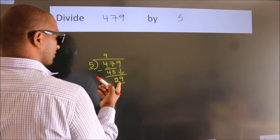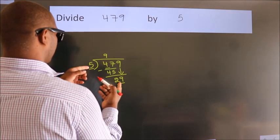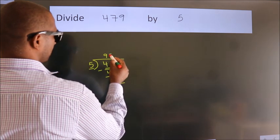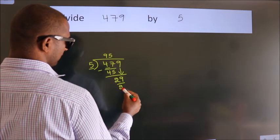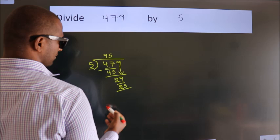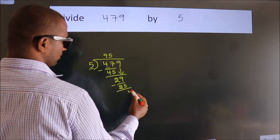A number close to 29 in the 5 table is 5 fives, 25. Now we subtract. We get 4.